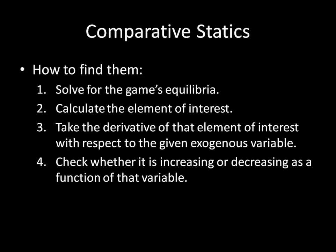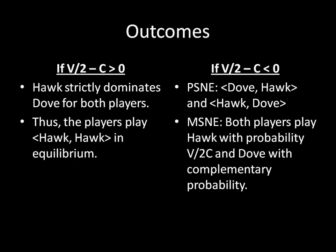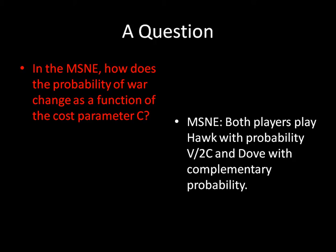Now that's a bunch of steps, but fortunately we're going to work through an example with the Hawk-Dove game. First, we need to solve for the game's equilibria — fortunately, we've already done that in the last video. Second, you calculate the element of interest. The question was: in the mixed strategy Nash equilibrium, how does the probability of war change as a function of the cost parameter C?